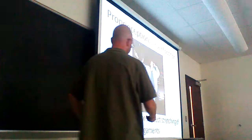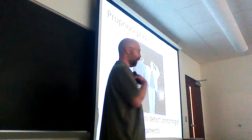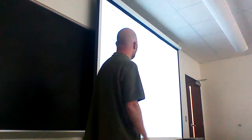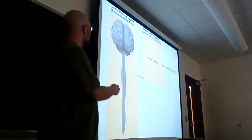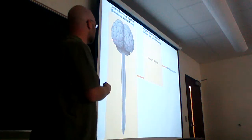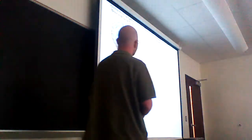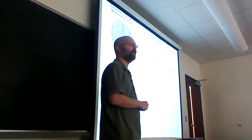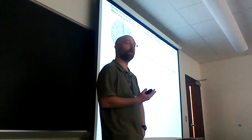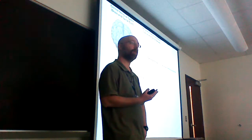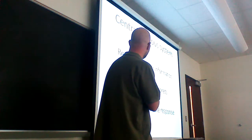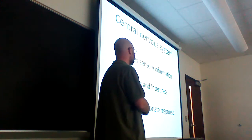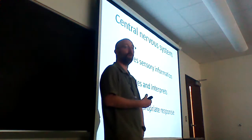Sensory neurons can detect stretching — not just the external environment, but also the internal environment. When we've got that information, we're going to send it to the central nervous system — the brain and the spinal cord — which will receive the sensory information, figure out what it means, and decide what the appropriate response is going to be.